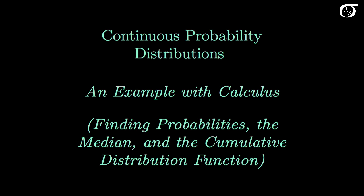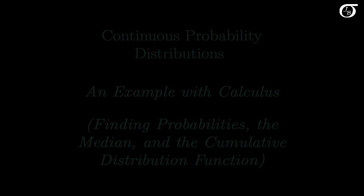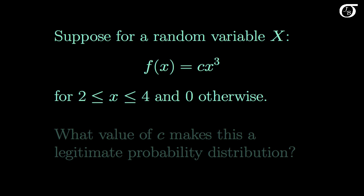Let's look at an example of finding probabilities, the median, and the cumulative distribution function for a continuous probability distribution. This does require calculus, and I'm going to assume that you are familiar with basic integration techniques. Suppose for a random variable x, the probability density function f is equal to c times x cubed when x is between 2 and 4, and 0 otherwise — c is just some constant.